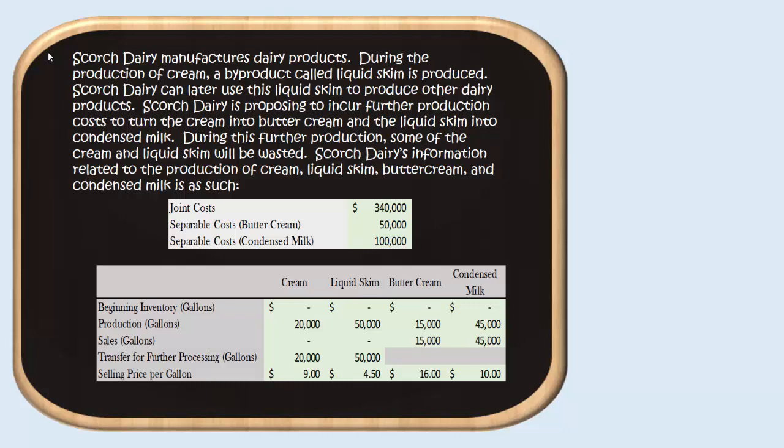For liquid skim, we again had zero beginning inventory. We produced 50,000 gallons of liquid skim. We chose not to sell any of that — we transferred the entire 50,000 gallons off to become condensed milk. But had we sold that liquid skim as is, we could have sold it for $4.50 per gallon.